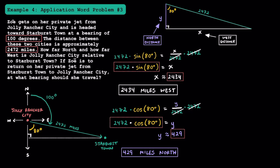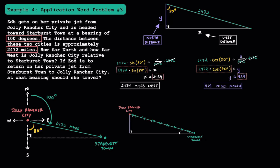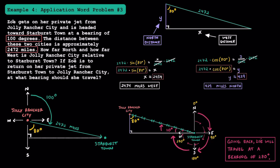Now let's find Zoe's return bearing from Starburst Town back to Jolly Rancher City. We knew one angle was 80 degrees; since all three angles add to 180, subtracting gives 10 degrees at Starburst Town. Starting from Starburst Town at 0 degrees and working clockwise: 0 to 90 is east, to 180 is south, to 270 is west, and adding the final 10 degrees gives 280 degrees. Zoe's return bearing is 280 degrees. Remember, the bearing going one direction isn't necessarily the same on the return trip.